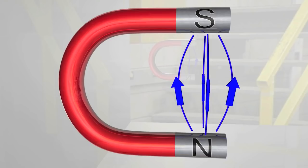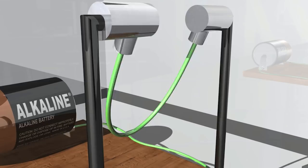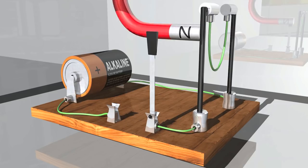This wire is arranged in a kind of pendulum so it can swing back and forth. Let's insert the horseshoe magnet into the setup and see what happens when electricity runs through the wire and creates a magnetic field around it.